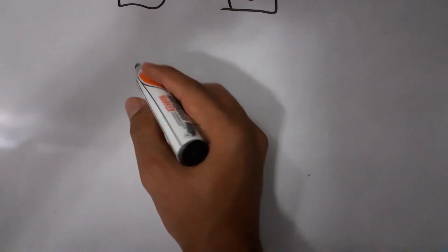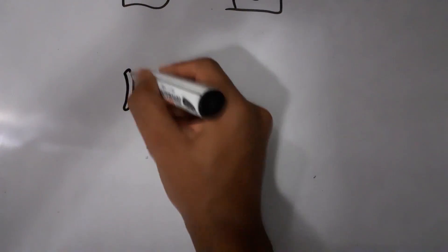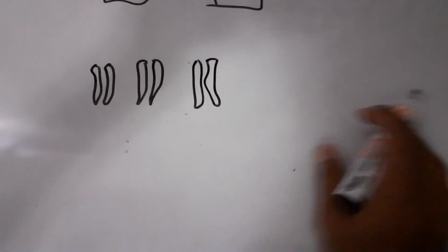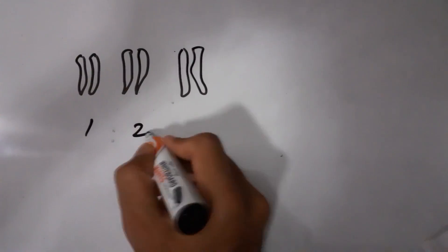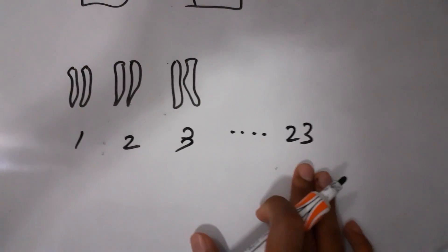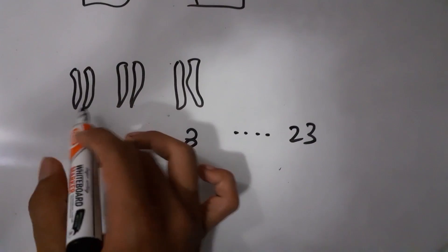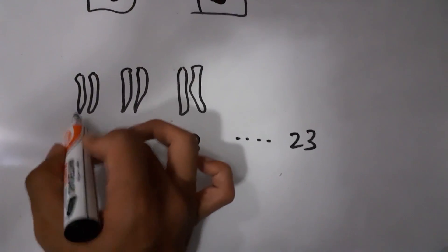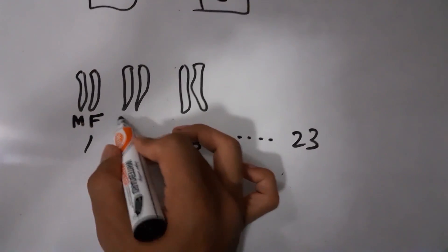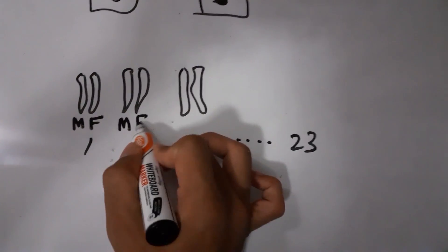In a normal cell, there are 23 pairs of chromosomes. Out of each pair, one single chromosome is given by the mother and the other one is given by the father. Here also, one from mother and one from father.